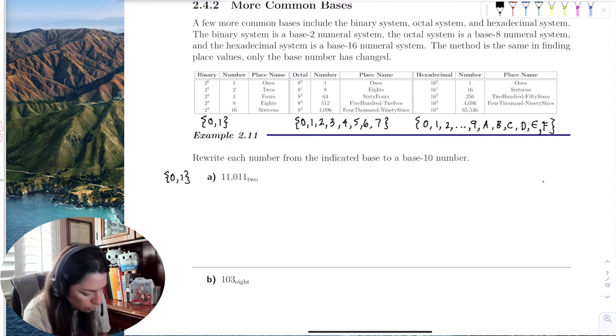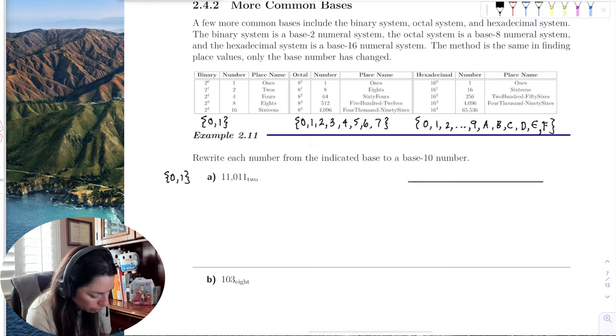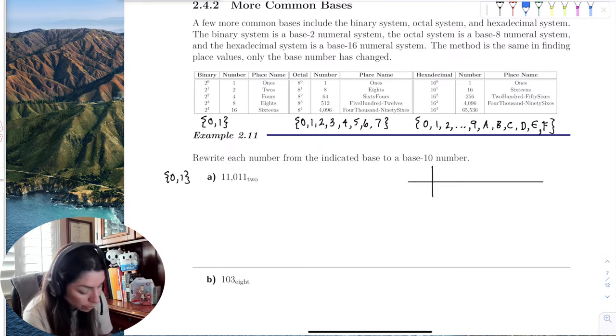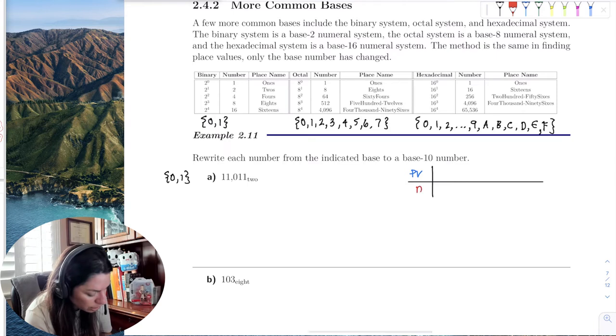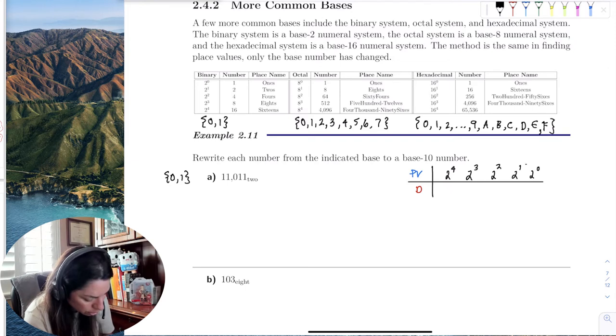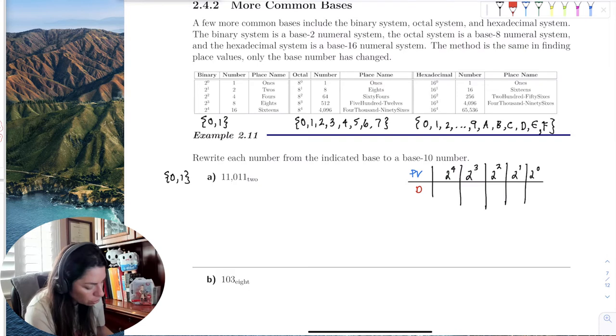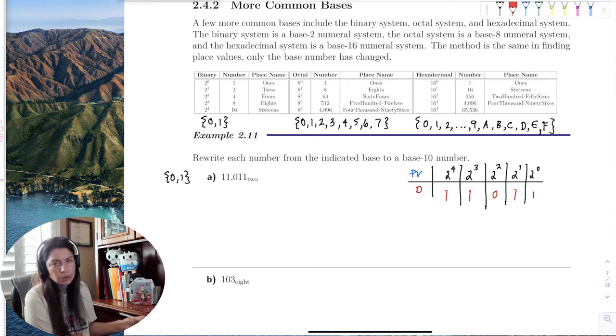Let me grab the table. Place value digits - I need 5 digits. So 2 to the 0, 2 to the 1st, squared, cubed, to the 4th. The digits would be 1, 1, 0, 1, 1. They have to be all 1's and 0's because that's the only digits in the set.